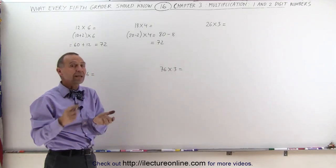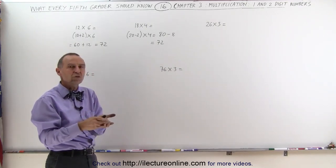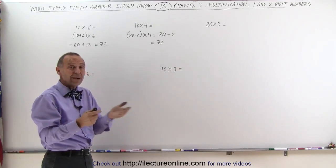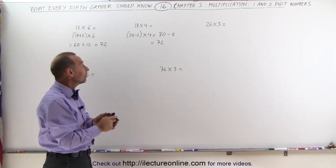So when you multiply 18 times 4, think of it as 20 minus 2. 20 times 4 is 80. 2 times 4 is 8. 80 minus 8 is 72.